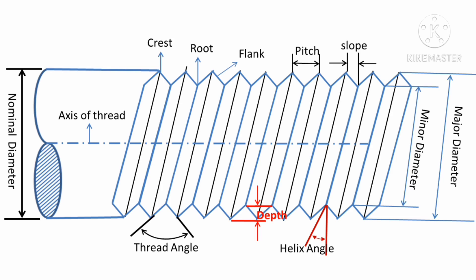The first technical term is crest. The crest is actually the outermost part of the thread. After that, the root is actually the innermost part of the thread.